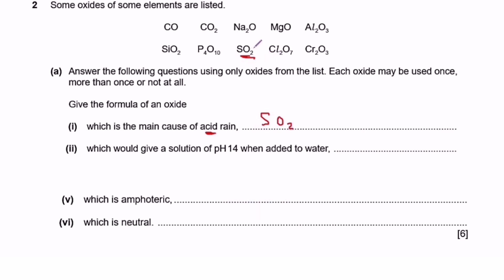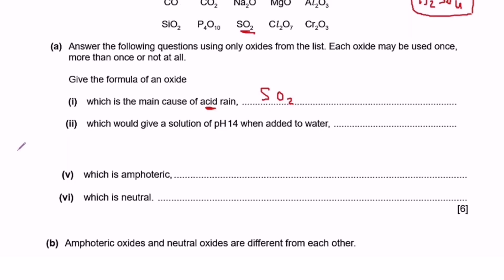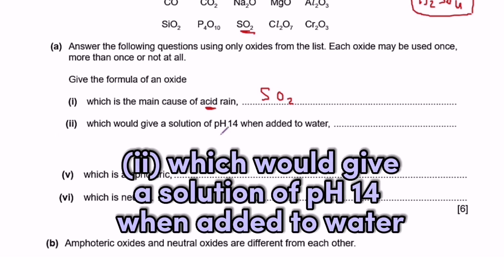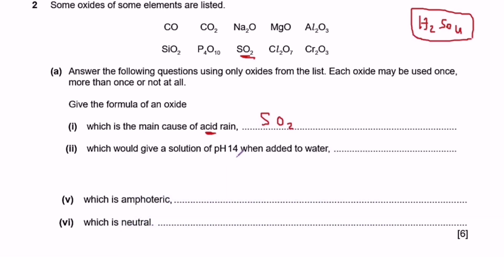Acid rain is caused by an acidic oxide. Coming back to the list, the answer is sulfur dioxide — SO₂ — because sulfur dioxide dissolves in water producing sulfuric acid, H₂SO₄. So sulfur dioxide is the answer for the oxide causing acid rain.